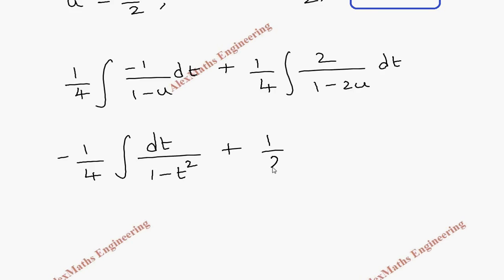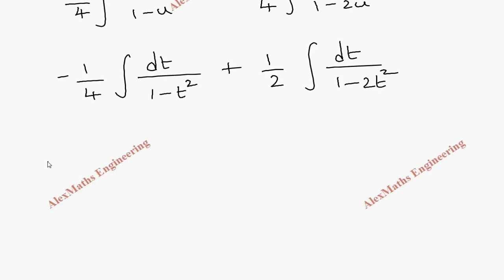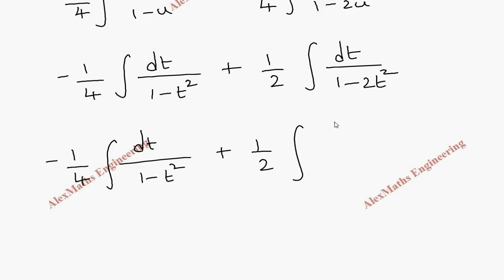For the second term, 2t² can be written as (√2·t)², making it easier to apply the formula. So the second integral is rewritten as dt / [1 - (√2·t)²].